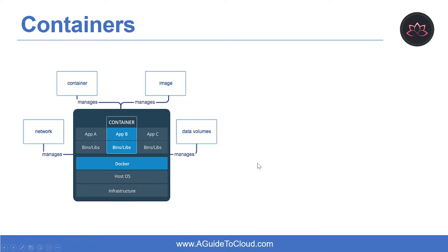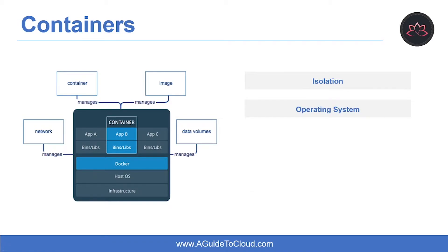So what are the features of containers? The first feature is isolation — it typically provides lightweight isolation from the host and other containers, but doesn't provide as strong a security boundary as a VM. The second feature is operating system: containers run the user mode portion of an operating system and can be tailored to contain just the needed services for your app, using fewer system resources.